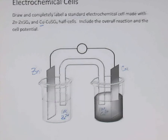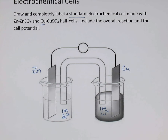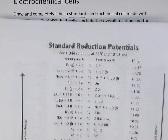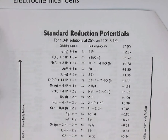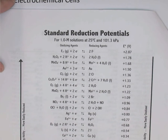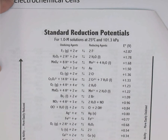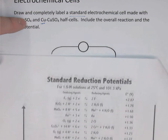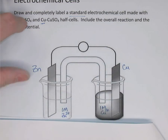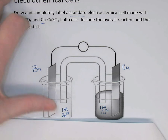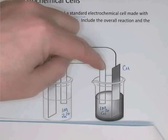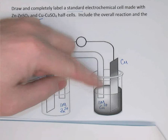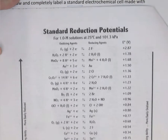The first thing I want to do is decide which of these two half cells — which of the two electrodes — will be the anode and which will be the cathode. To decide that, I'm going to look in my data booklet at the table of standard reduction potentials. I want to find two reactions on this chart: one involving zinc and Zn²⁺, and one involving copper and Cu²⁺.